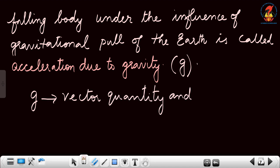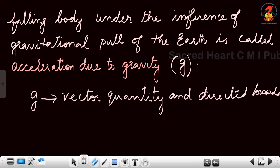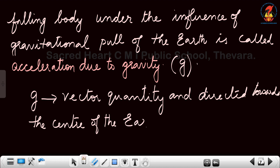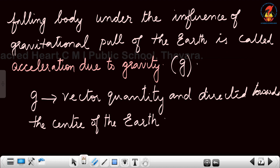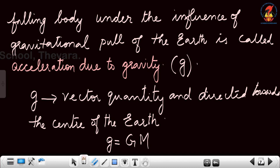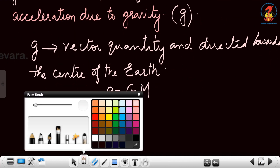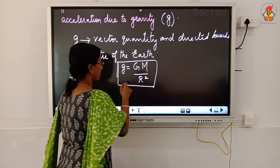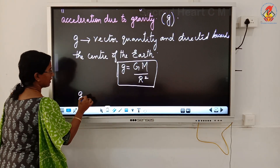The direction of g is directed towards the center of the earth. The equation relating small letter g and capital letter G is: g = GM/r², where capital G is the universal gravitational constant, M is the mass of the earth, and r is the radius of the earth. From this equation it is clear that small letter g does not depend on the mass or size of the object.